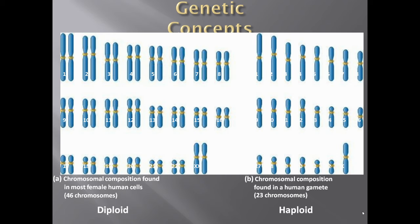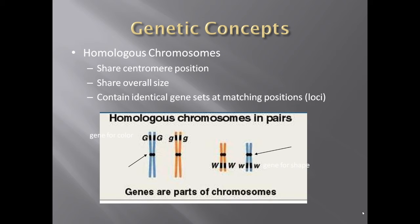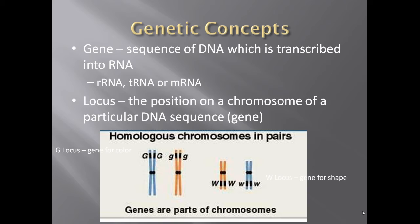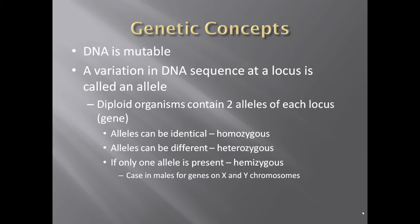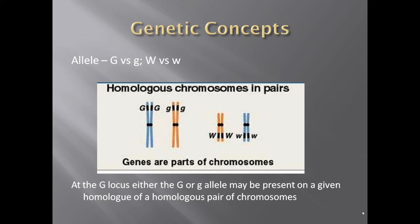Homologous chromosomes share centromere positions, overall size, and contain identical gene sets at matching positions. A gene is a sequence of DNA that is transcribed into RNA. Types of RNA include small rRNA, small dsRNA, and mRNA. Locus is the position on the chromosome of a particular DNA sequence. DNA is mutable. A diploid organism contains two alleles at each locus — if identical they are homozygous, if different they are heterozygous, and if only one allele is present it is hemizygous.